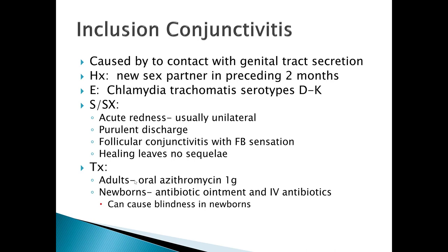Inclusion conjunctivitis is caused by contact with the genital tract and there usually is a history of a new sexual partner in the preceding two months. Etiology is Chlamydia trachomatis serotypes D through K. Signs and symptoms include acute redness, usually unilateral, purulent exudate, and follicular conjunctivitis with a foreign body feeling. Healing leaves no sequelae, so these people usually don't have the issues that those with trachoma have.